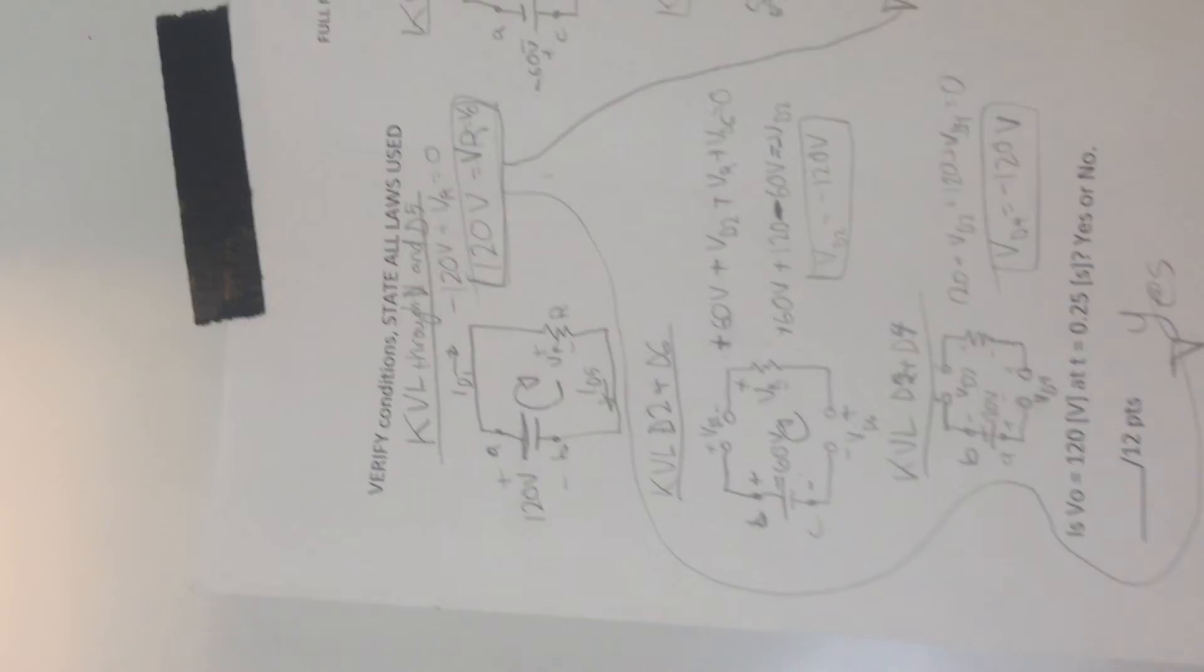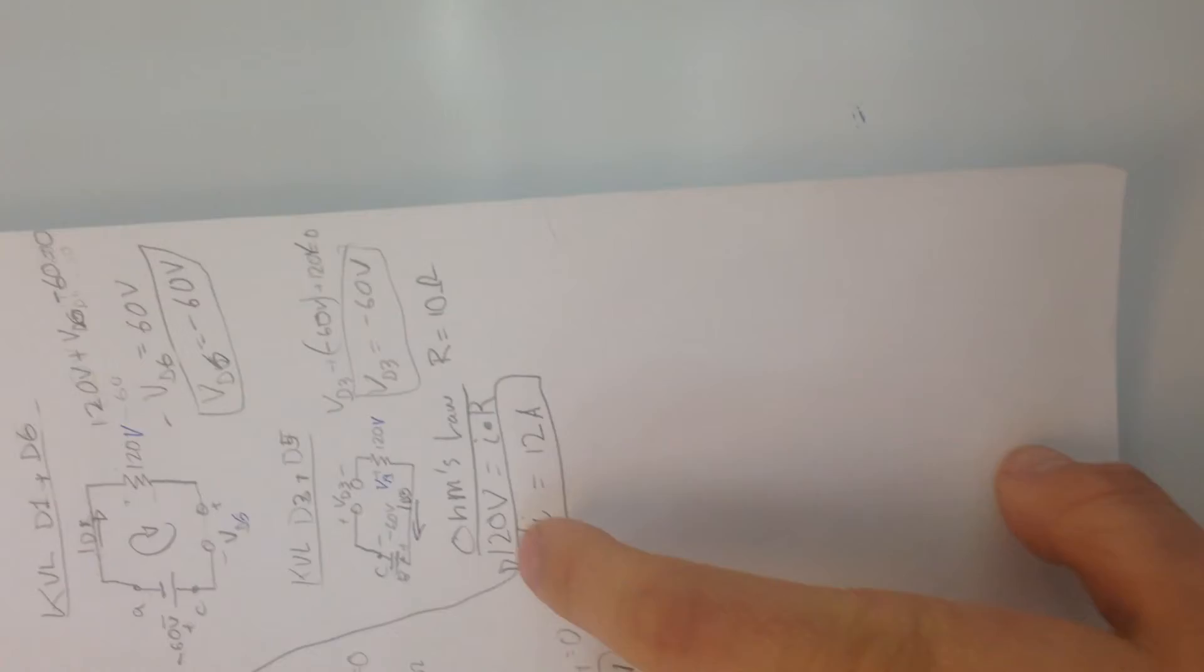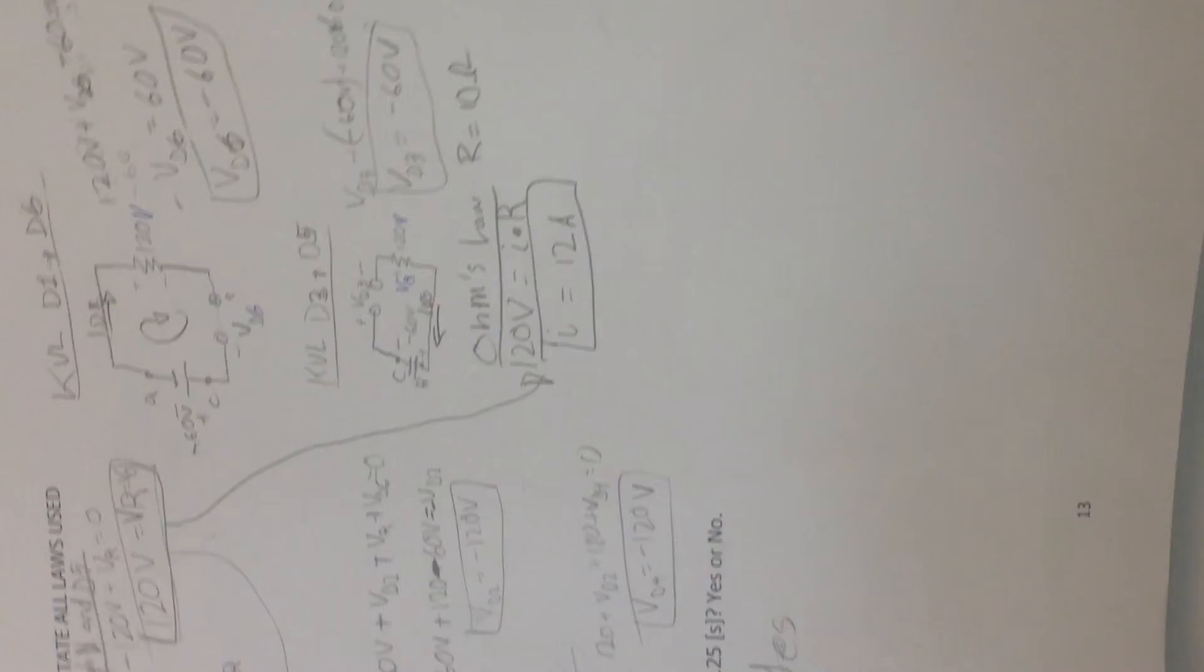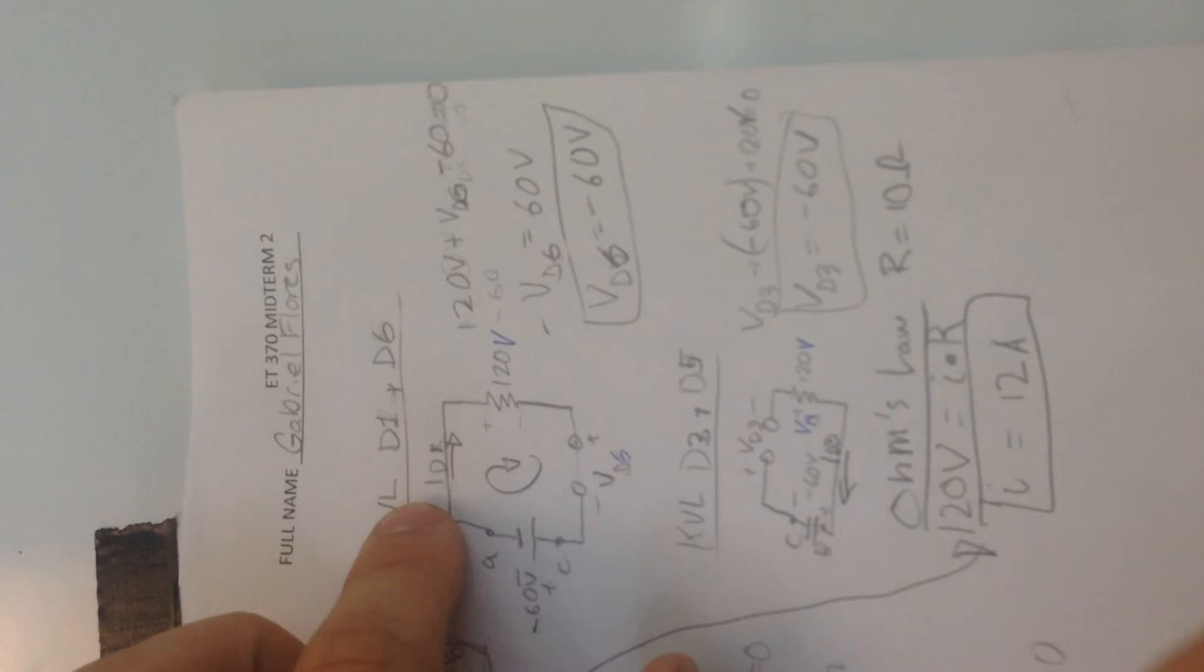Now, I did this a little out of order, but down here, you'll notice that I took the 120 volts, and I did Ohm's Law. So, V equals I times R. We know what R is, so we found the current based off of 10 ohms and 120 divided by 10. That was easy. So, now we're going to establish all the other identities.